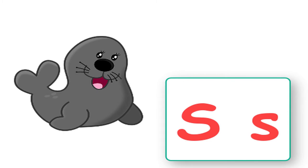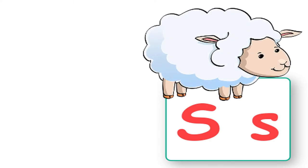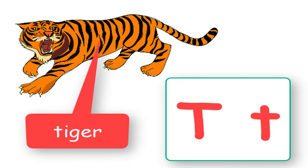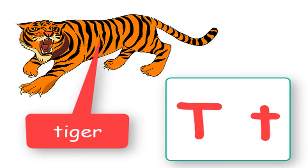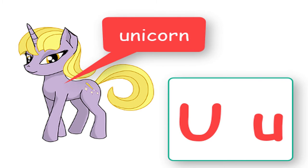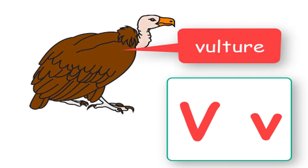S says seal, seal. S says sheep, sheep. T says tiger, tiger. U says unicorn, unicorn. V is for vulture, vulture.